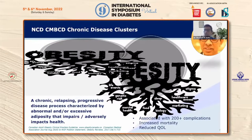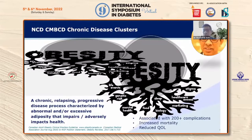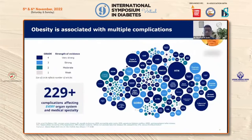Obesity cuts short the lifespan, increases mortality, and impacts quality of life. A very large proportion of people living in India have obesity — the approximate estimate is around 135 million, because we are thin-fat Indians. Multiple complications are associated with obesity; the dark blue represents grade 4 evidence, lighter blue grades 3, 2, and 1, indicating very strong to weak strength of evidence. More than 229 complications affect every organ system.